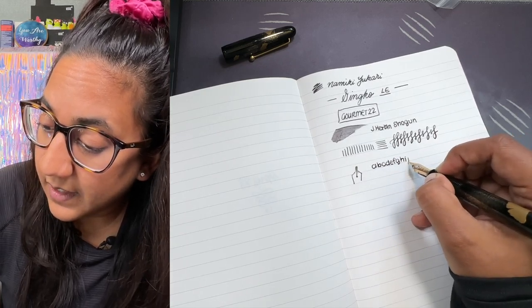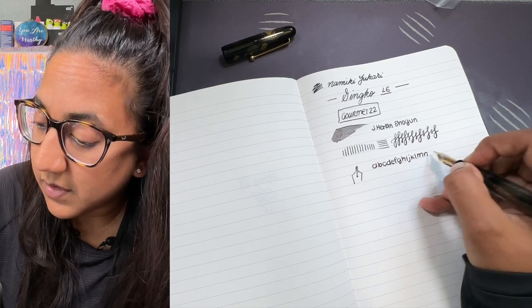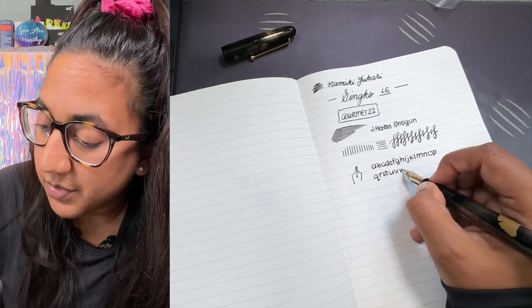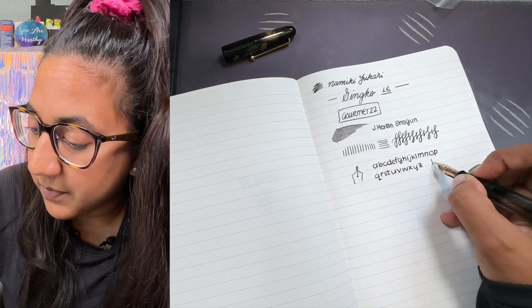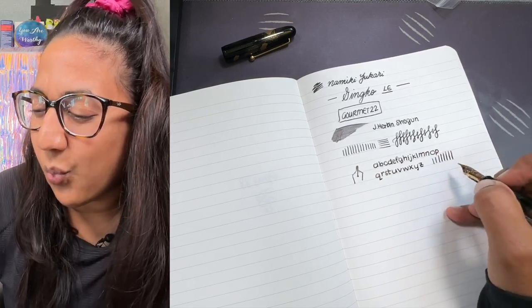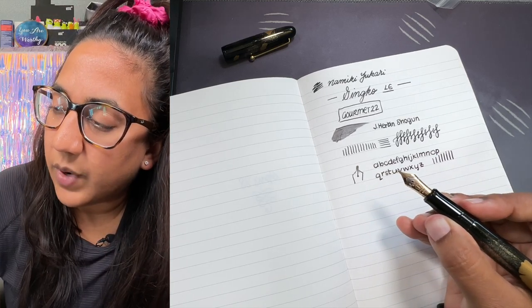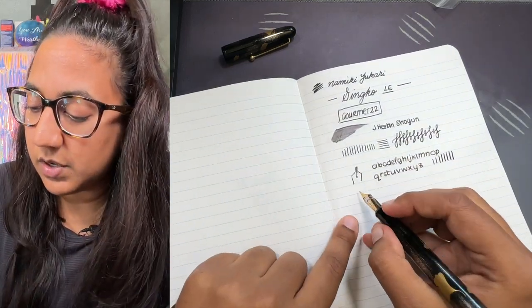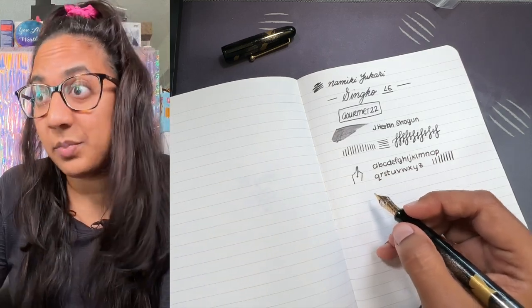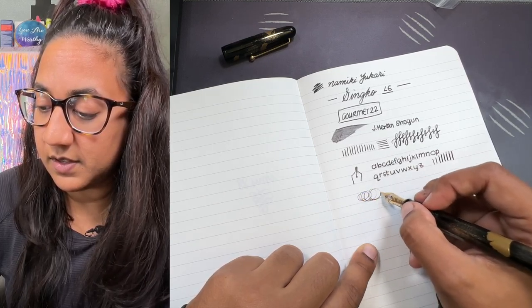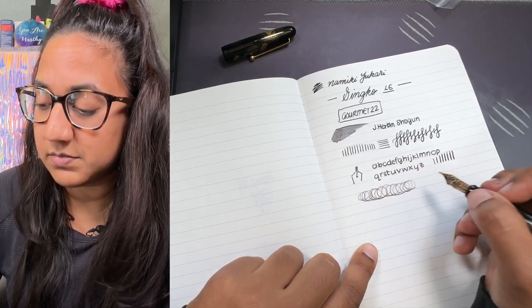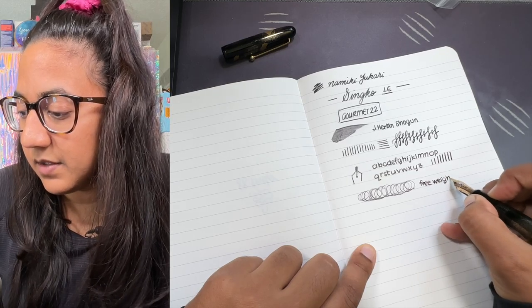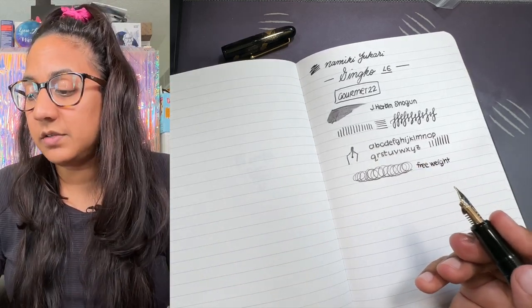It is a firm nib even though it is 18 carat gold. Sometimes there is the belief that gold nibs are soft and that is not always the case. In this case it is firm. We can apply a bit of pressure and it gets to be a wet broad because of the way the tines are shaped. The shoulders aren't really spreading, it's actually the tines that are spreading. So I would actually say be gentle with it, don't apply pressure. It's not meant to be used with pressure. It writes with free weight, it just performs so well.